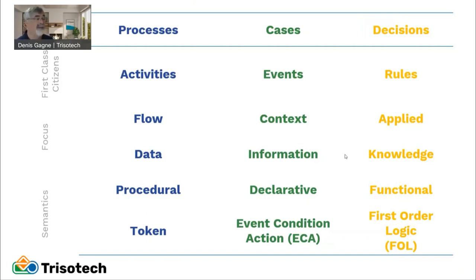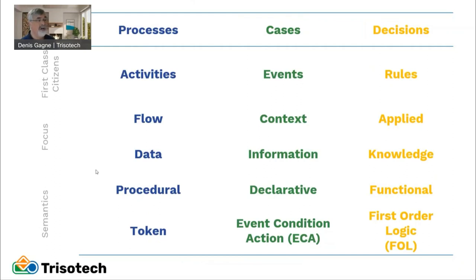So there you go — a very quick introduction of BPMN, CMMN, and DMN and the differences in their focus. BPMN's first class citizen: activities. CMMN's first class citizen: events. DMN's first class citizen: rules — dealing with data, information, and knowledge, and a more prescriptive/procedural, declarative, and functional description respectively.